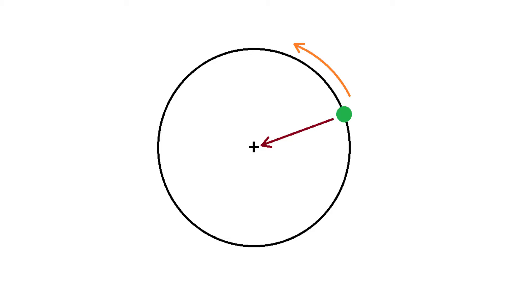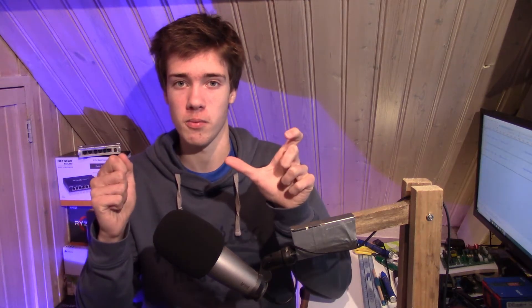This centripetal force can be caused by basically anything that can apply some force. For example, if this is an object attached to a rope that I'm spinning round with my hand, the rope is applying the centripetal force. If this is a satellite rotating round a planet, then it's the gravity of the planet acting as the centripetal force. The amount of centripetal force required to keep an object in a certain trajectory can be calculated using this formula.